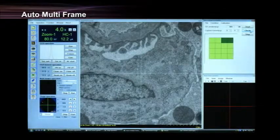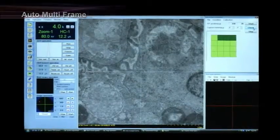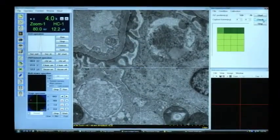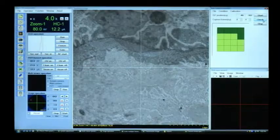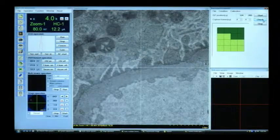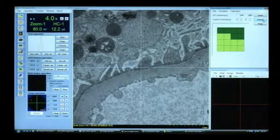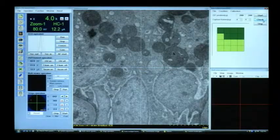The HT7700 montage acquisition uses both mechanical stage shift or digital image shift to acquire a sequential set of images. Acquiring continuous images is possible by both methods, utilizing Hitachi's unique auto-multi-frame function.